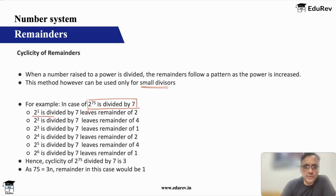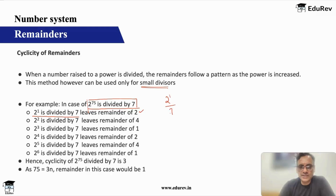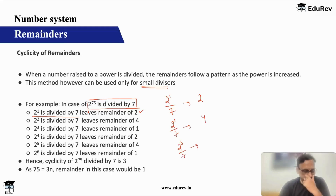I start with two to the power one divided by seven — my remainder is two. Two squared divided by seven — my remainder is four. Two cubed divided by seven: eight divided by seven gives my remainder as one.